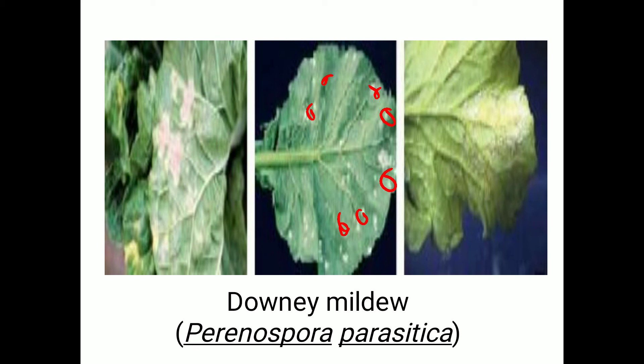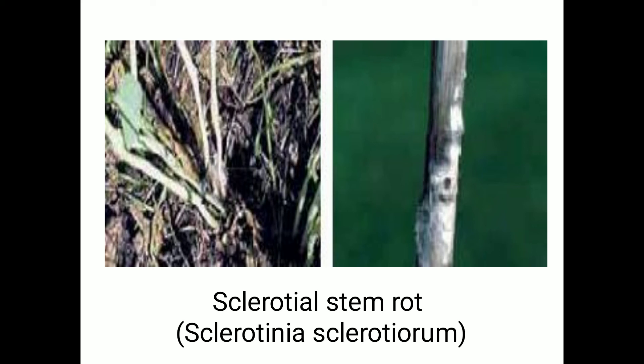The last disease is Sclerotinia stem rot, caused by the fungus Sclerotinia sclerotiorum — a soil-borne disease. The fungus directly attacks near the stem, developing water-soaked spots, and the stem is surrounded by white cottony growth. As the disease progresses, the affected portion of the stem develops a bleached or blighted appearance.